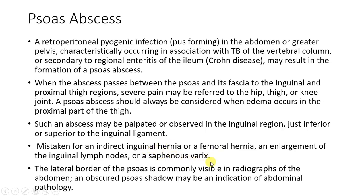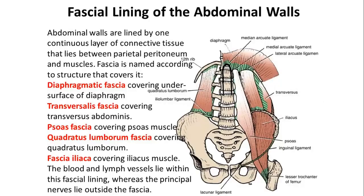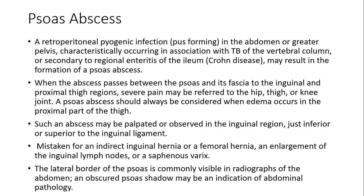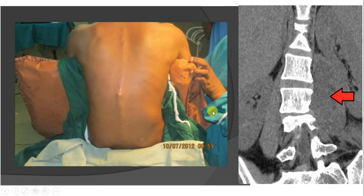It can be mistaken for an inguinal hernia or femoral hernia because if you have seen the diagram, below the inguinal ligament it comes down and can resemble with femoral hernia or inguinal hernia — the swelling of the abscess can resemble. When you take a radiograph, the lateral border will be visible and the abscess shadow can also be visible. There is a case of psoas abscess on the right side. You can see the vertebral column — it may be because of tuberculosis.